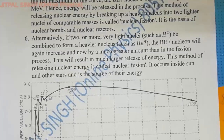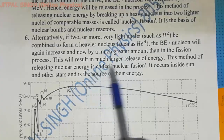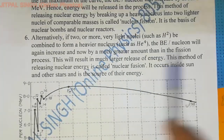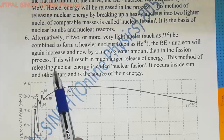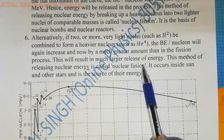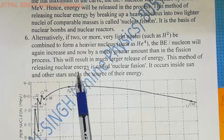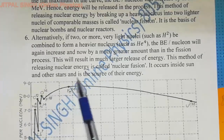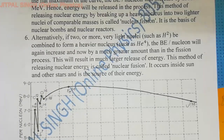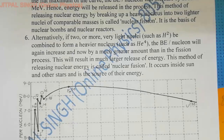Nuclear fusion is a very high energy source process. The binding energy per nucleon increases by a much greater amount than in fission, resulting in a much larger release of energy. This method of releasing nuclear energy is called nuclear fusion. It occurs inside the sun and other stars and is the source of their energy — the reason the sun and stars illuminate and release such enormous amounts of energy is nuclear fusion.